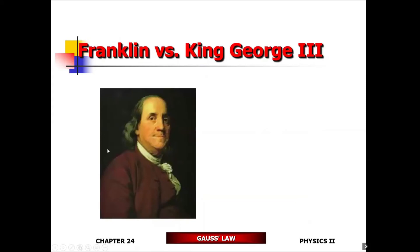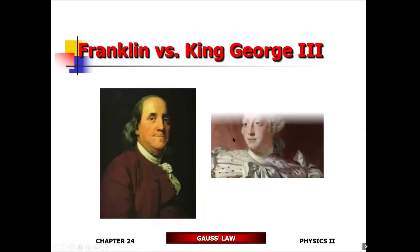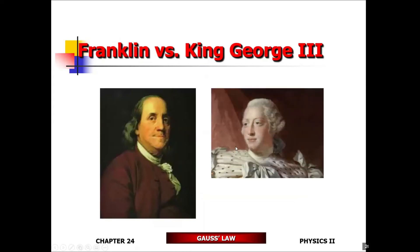That's the design Franklin came up with. King George III decided to come up with a spherical lightning rod instead. Franklin chose not to patent his design so anyone could use it. When you have a spherical metallic ball, the charges are uniformly distributed, so the strength of the electric field is not as great — meaning it's not as attractive to lightning.